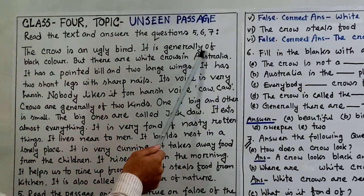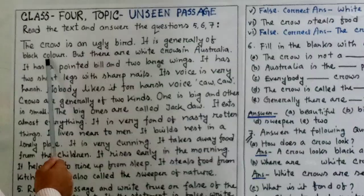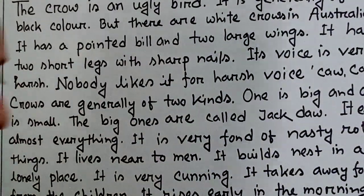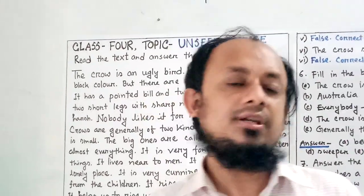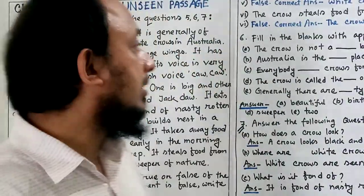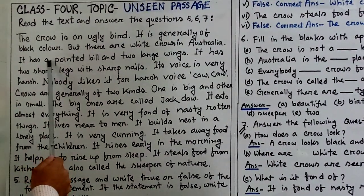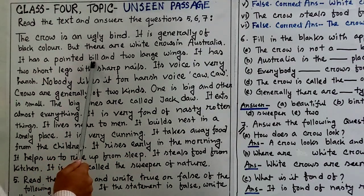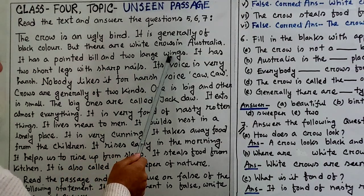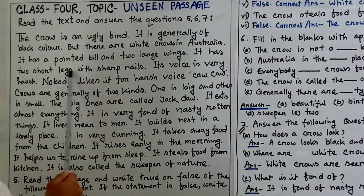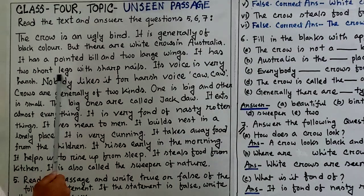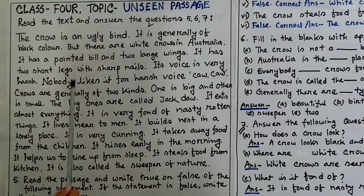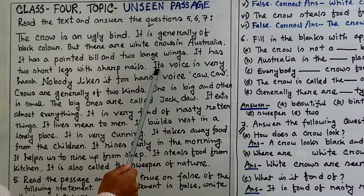It is generally of black color. But there are white crows in Australia. It has two short legs with sharp nails. Its voice is very harsh.